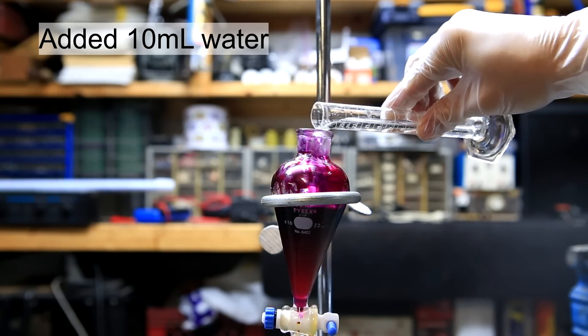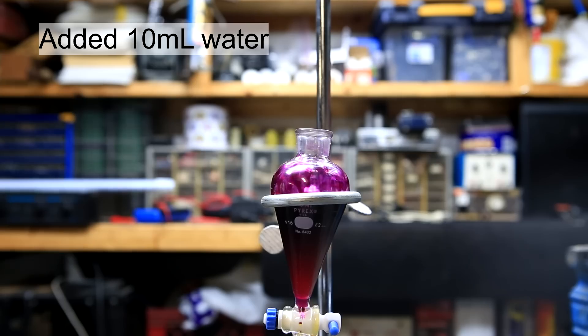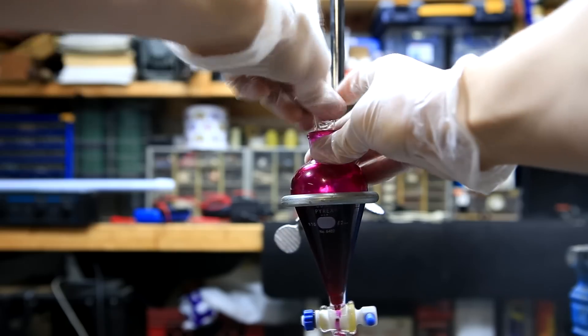Afterwards, 10 ml of water is added to make sure we dissolve as much of the salt as possible in the water layer. And for one final time, the separatory funnel is capped, shaken, and vented, and then the layers are allowed to separate.